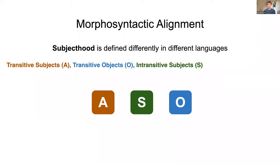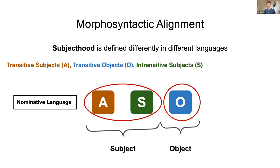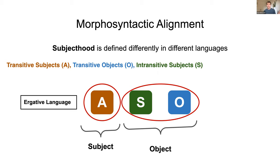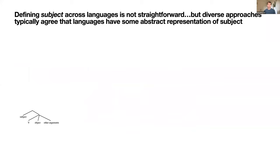To define the differences between nominative and ergative languages: in a nominative language, the transitive subject (A) and the intransitive subject (S) pattern together, whereas O gets marked differently. In an ergative language, the transitive subject A gets marked on its own, and S and O pattern together morphologically, and in some cases syntactically as well. So defining subject across languages is not straightforward.